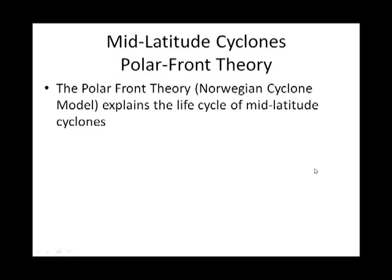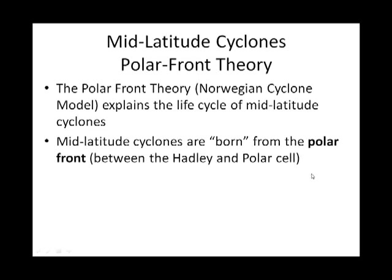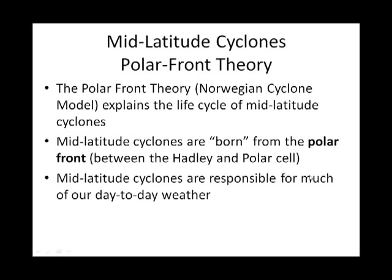Polar front theory counts on the fact that it starts out as a stationary front between the top part of the Ferrel cell and the bottom part of the polar cell. Where those two cells meet, about 60 degrees latitude — although that will wiggle around — where they meet, we call the polar front. According to this theory, let's look at what happens as a mid-latitude cyclone matures.